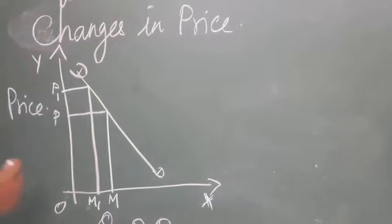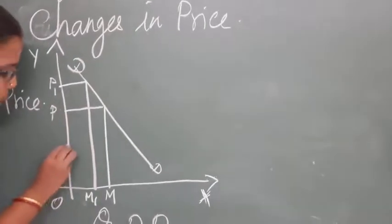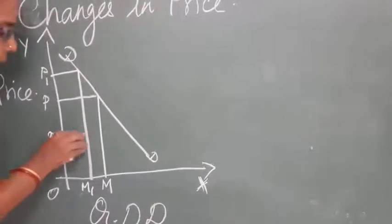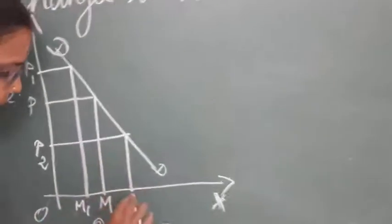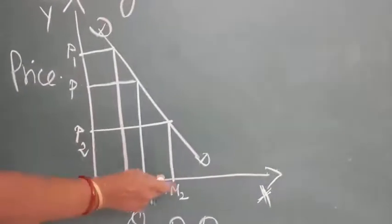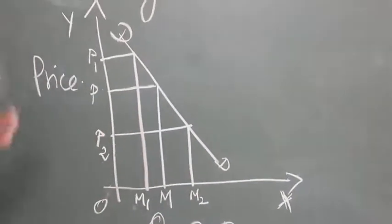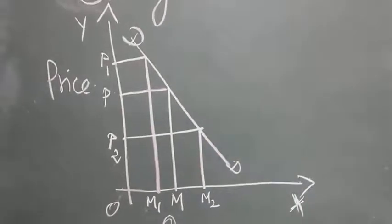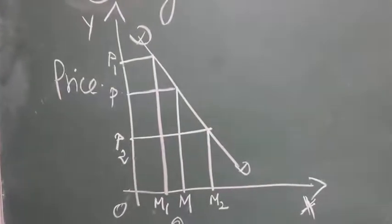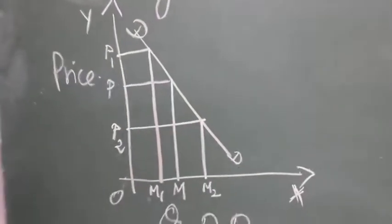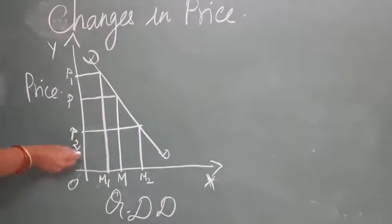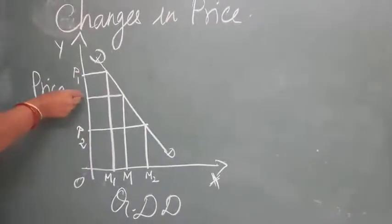Now the price is decreasing from OP to OP2. What would be the demand? The demand is now OM2. If the price decreases, the demand increases. When demand is changing only because of price, it is called extension or contraction. Both can happen because of changes in price, based on the commodity needed.